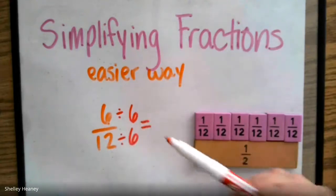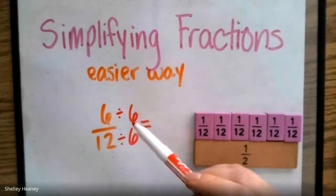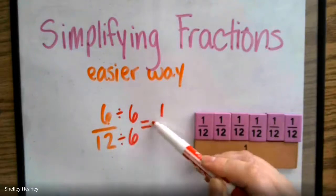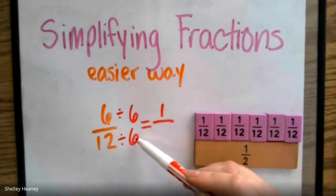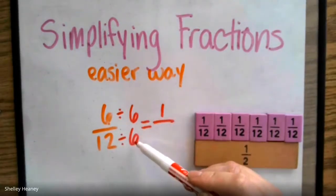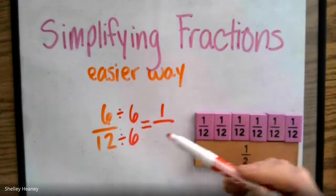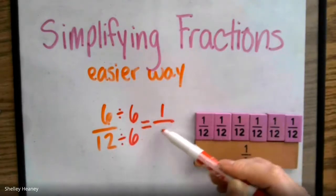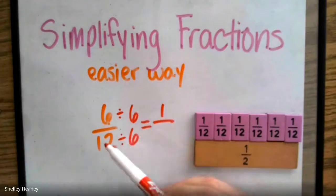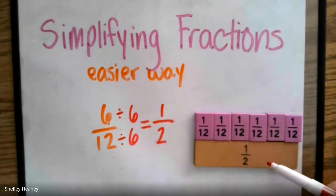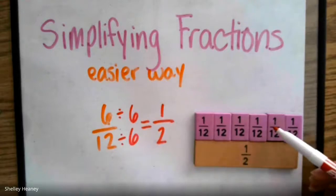What's 6 divided by 6 going to give us? 6 divided by 6 gives us 1. What does 12 divided by 6 give us? If you're struggling with your division, remember to go the other way. What times 6 will give us 12? That number is 2. One half is equivalent or equal to 6 twelfths.